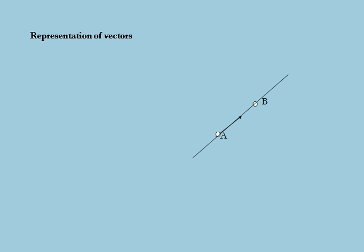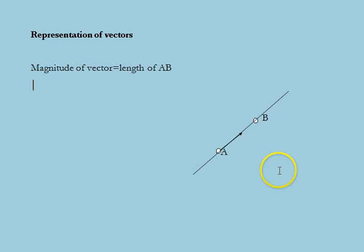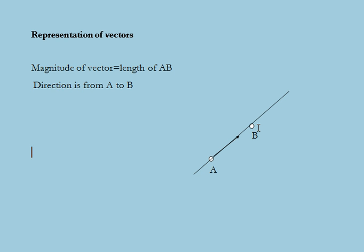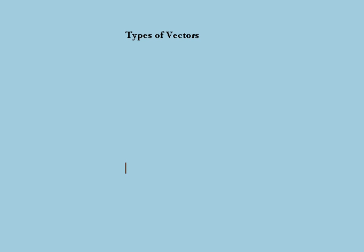A vector has magnitude as well as direction, so it can be represented geometrically by a directed line segment AB as shown in this figure. A vector is determined by two points A and B such that the magnitude of this vector is equal to the length of segment AB, and its direction is from A to B. The vector is represented as AB with an arrow above it, where point A is the origin or initial point and B is the terminal or end point.